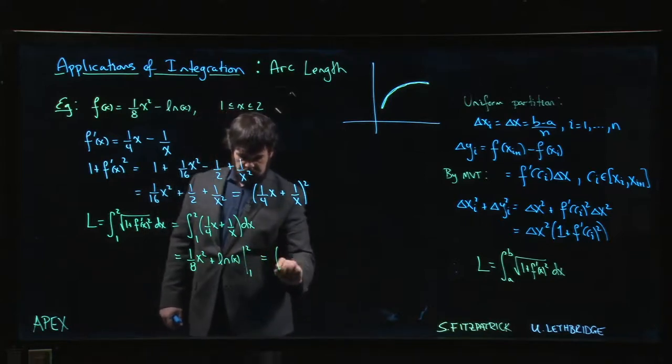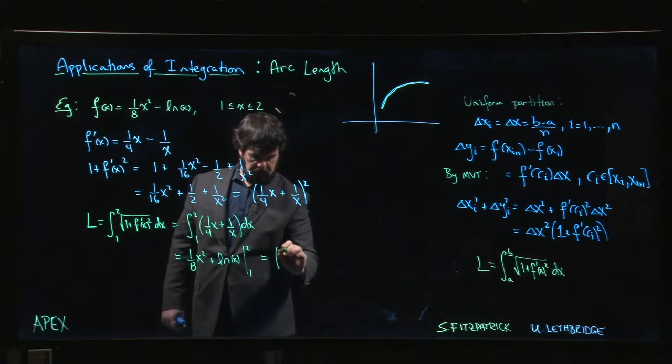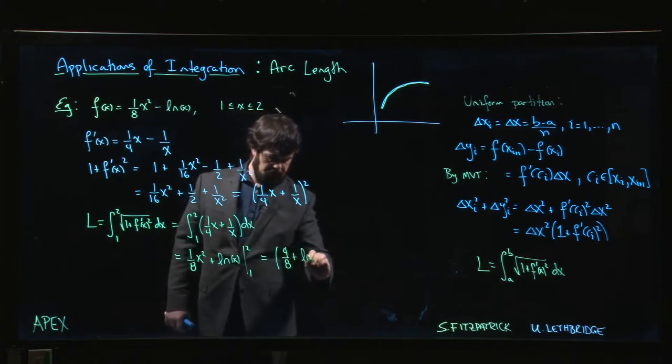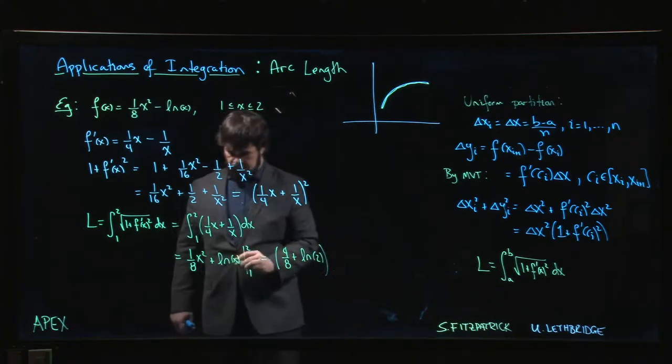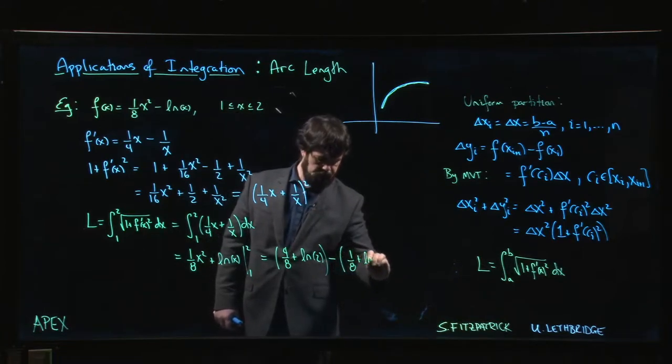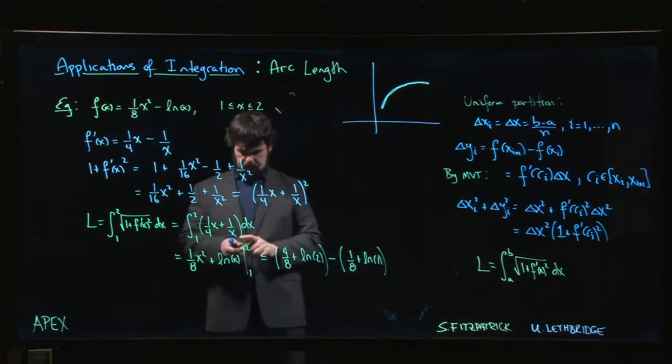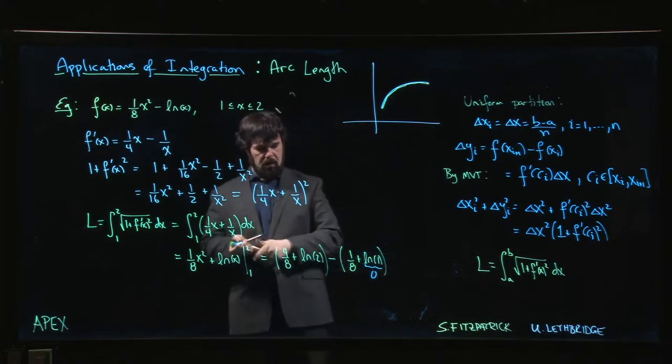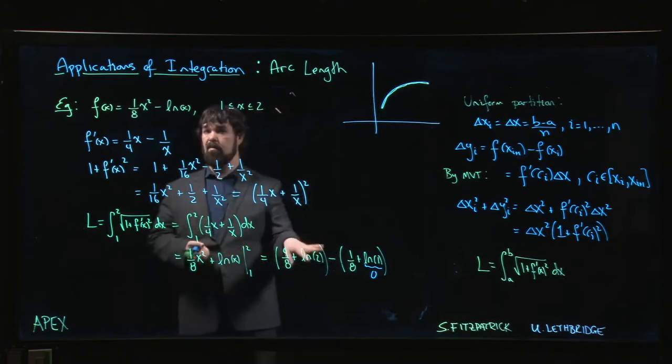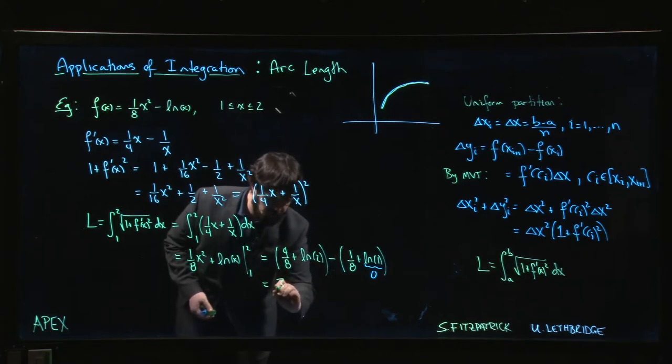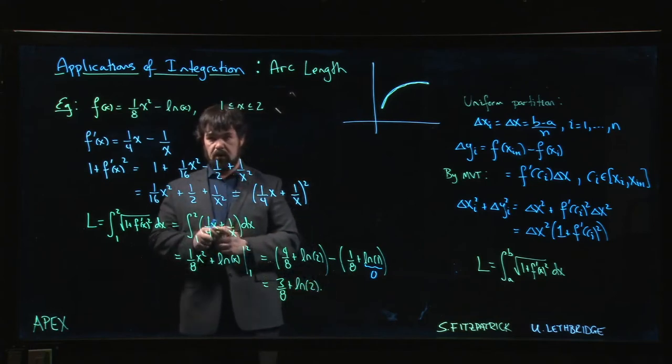So plugging in the upper limit, 2^2 is 4, so we get 4/8 obviously we're going to simplify that, plus ln(2). Subtract—we put in the lower limit 1/8 plus ln(1). And of course ln(1) is just 0, so we have 4/8 - 1/8, that's why maybe we didn't bother to simplify. It's easier to subtract: 3/8 + ln(2), and that gives us the length of our curve.